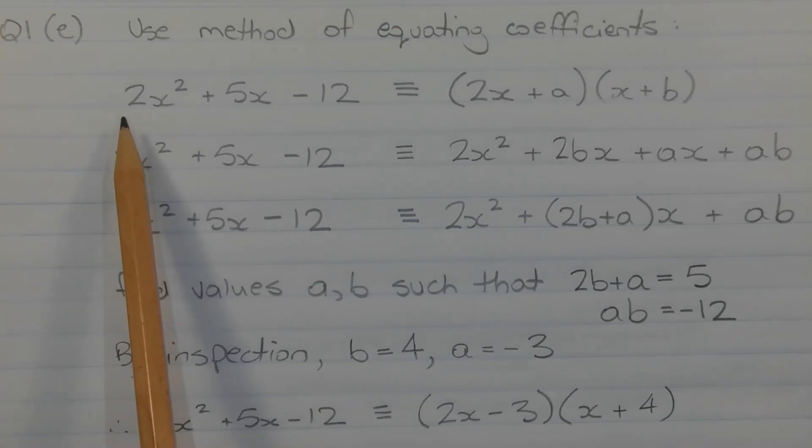And 2 being a prime number, there's only one possible solution for this term here and this term here. That is 2x and x.